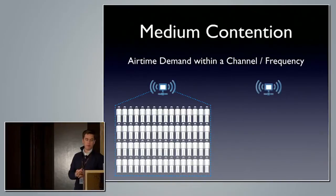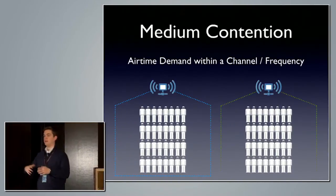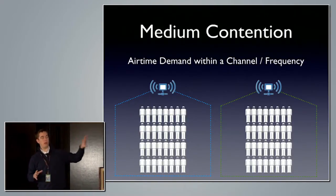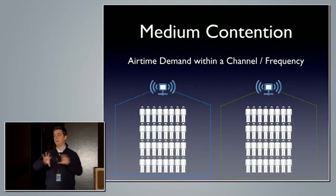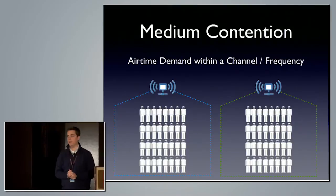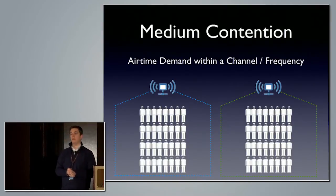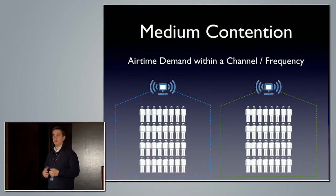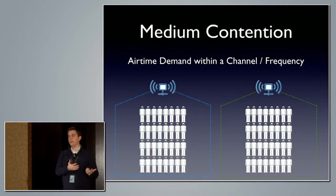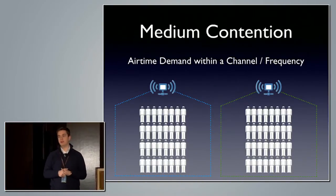The second form of medium contention is airtime demand or utilization within a channel or cell. What we want to do is go from a large clump of users and start breaking them up into smaller contention domains. About 15 to 20 years ago, we had Ethernet networks that were shared hub-based networks — we started putting in bridges and breaking up those contention domains. Well, Wi-Fi is a shared medium. We need to break up those contention domains as much as we can, and we do that by segmenting users onto different channels.